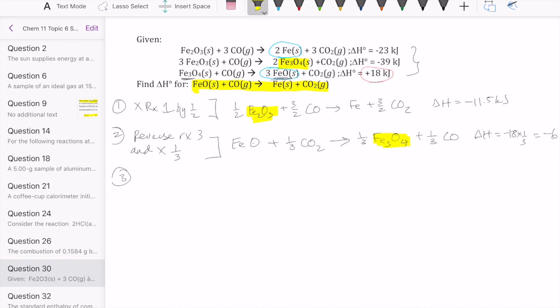So I need to cancel it out with Fe₃O₄ that's already on the product, so I need to reverse it and make it react. Fe₂O₃ is on the reactant. I need to cancel the reactant Fe₂O₃, so I need to flip that and make it to the product side. So I need to reverse reaction 2.